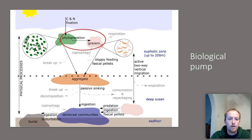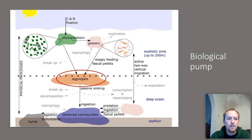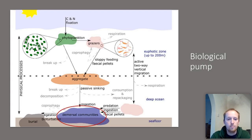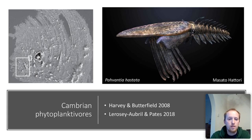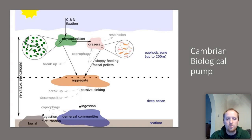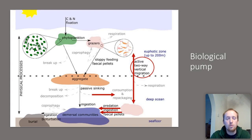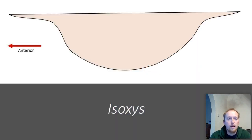Phytoplankton are grazed on and through a combination of fecal pellets and phytoplankton sticking together, large aggregates form which provide energy and nutrients for demersal communities on the ocean bottom. In the Cambrian, we have good evidence for grazing on phytoplankton from small carbonaceous fossils. Also the radiodont Pahvantia from Utah. So in the Cambrian, this part of the biological pump is operating in a similar architecture to the modern. However, what's received less attention is the possibility that two-way vertical migration is also operating at this time — and that's going to be the topic of this talk, looking at *Isoxys*.